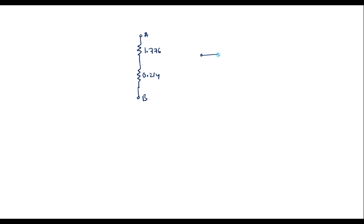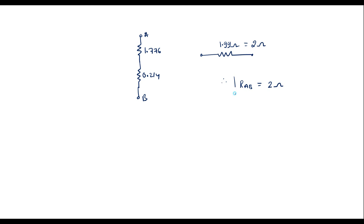Simplifying, both are in series: 1.776 + 0.214 = 1.99 ohm, which is almost equal to 2 ohm. Therefore, the equivalent resistance between A and B is 2 ohm. This is the required result.